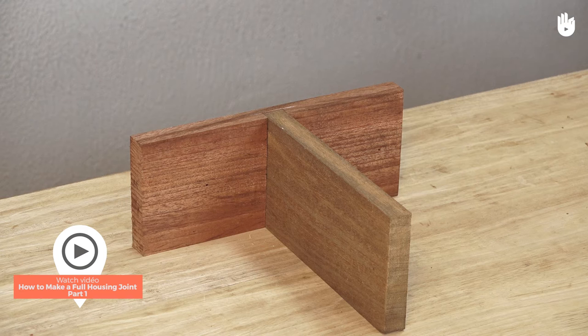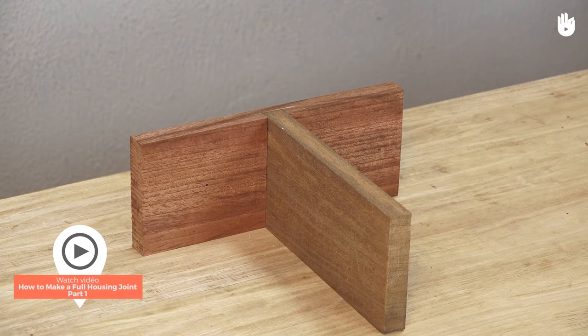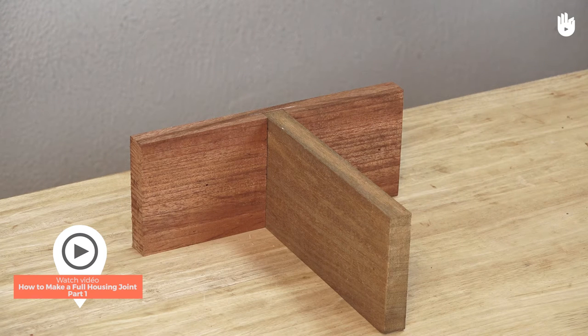If you have followed How to Make a Full Housing Joint Part 1, you can now continue to glue the pieces together.